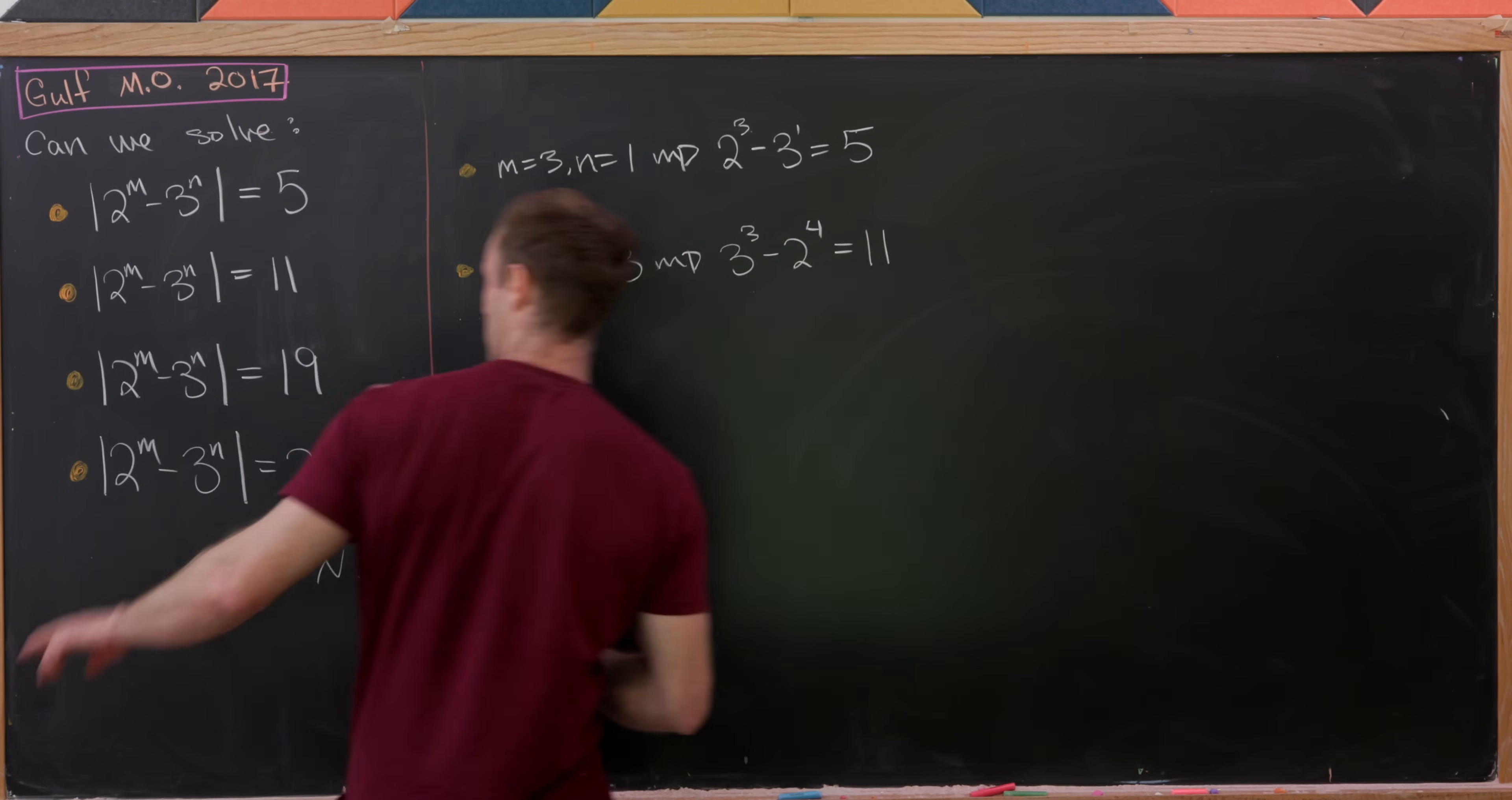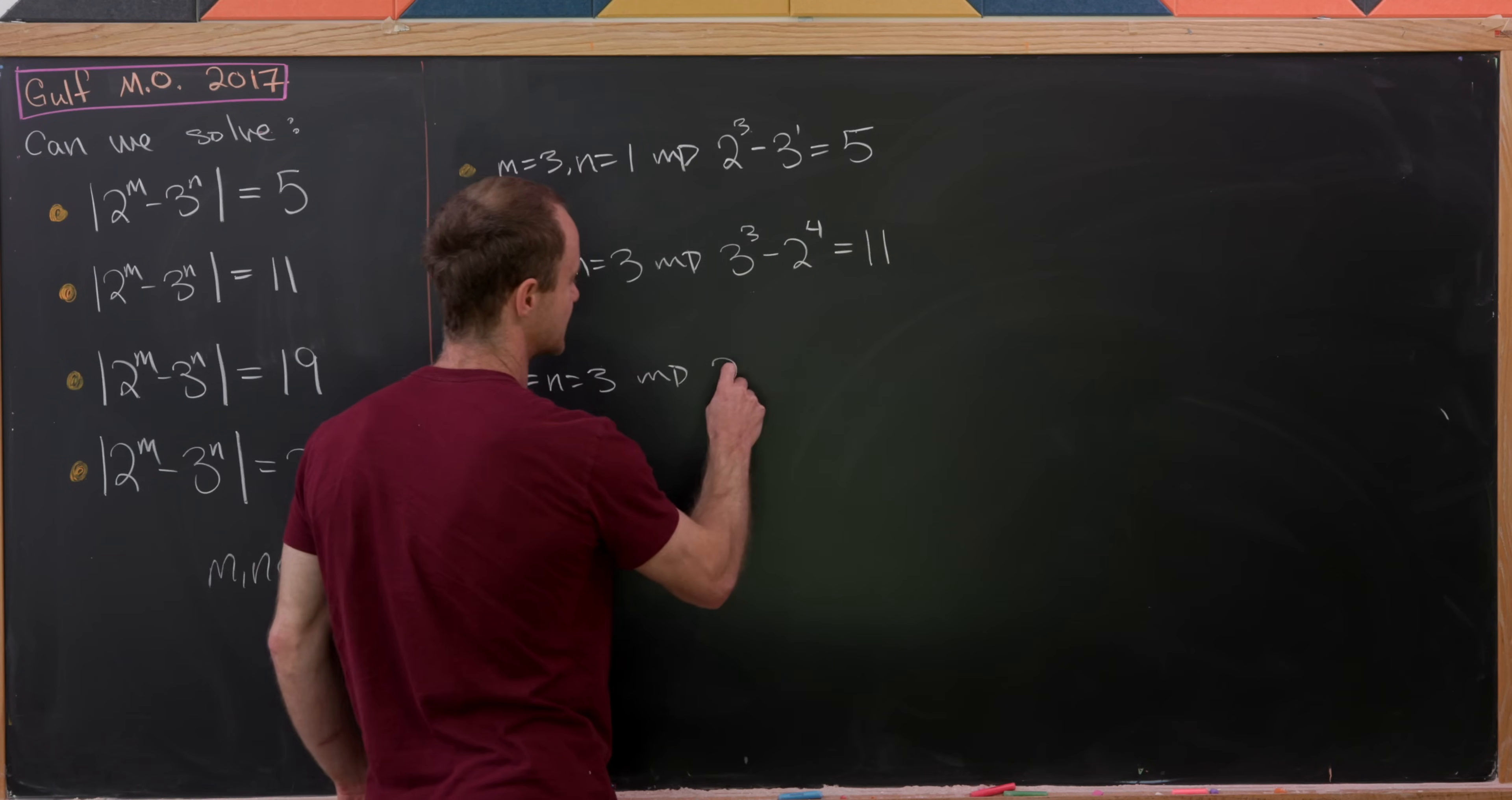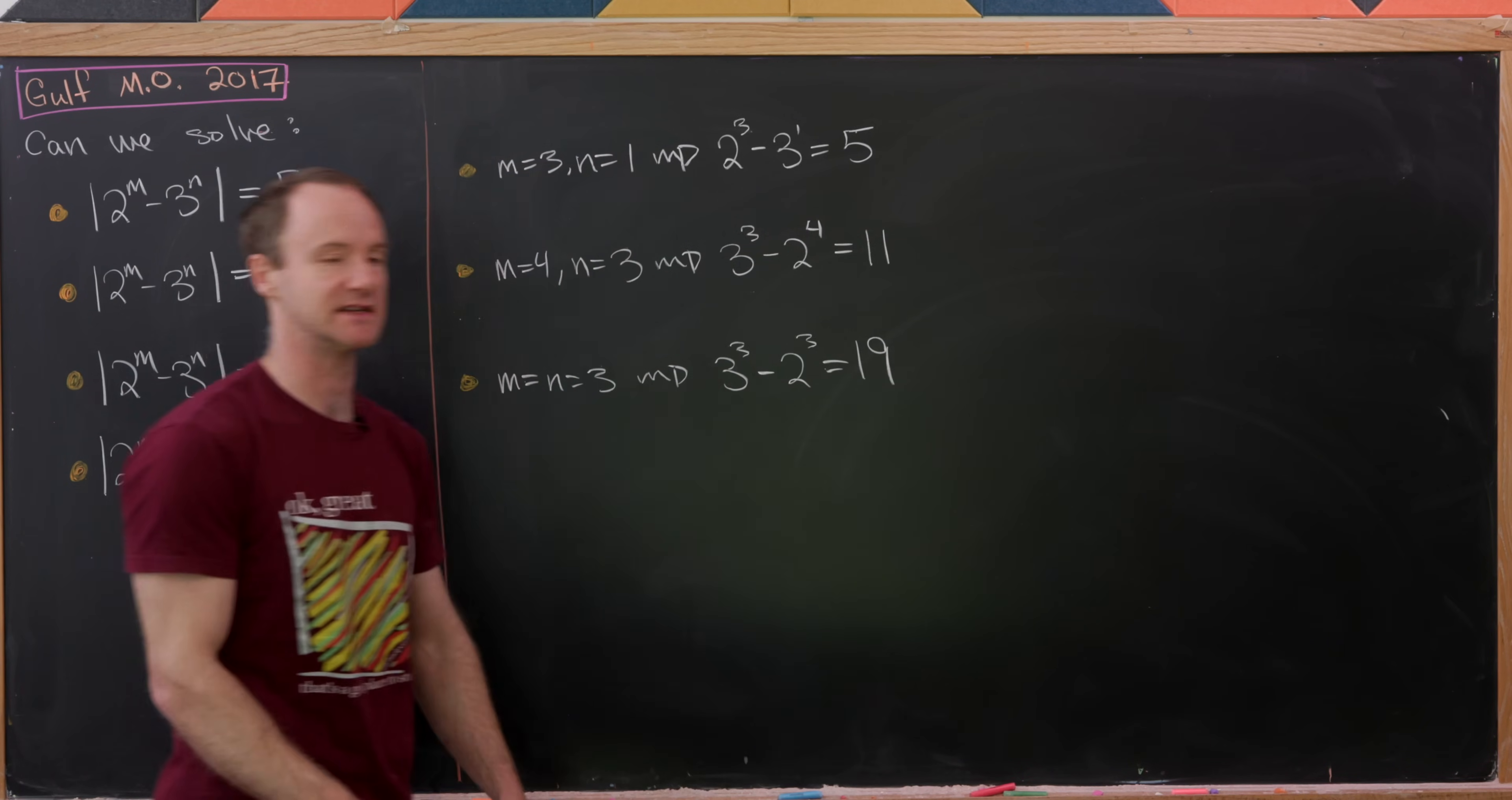And then finally we can make this one with 19 by taking m and n equal to 3. That's because we'll have 27 which is 3 cubed minus 8 which is 2 cubed. That's most definitely equal to 19.